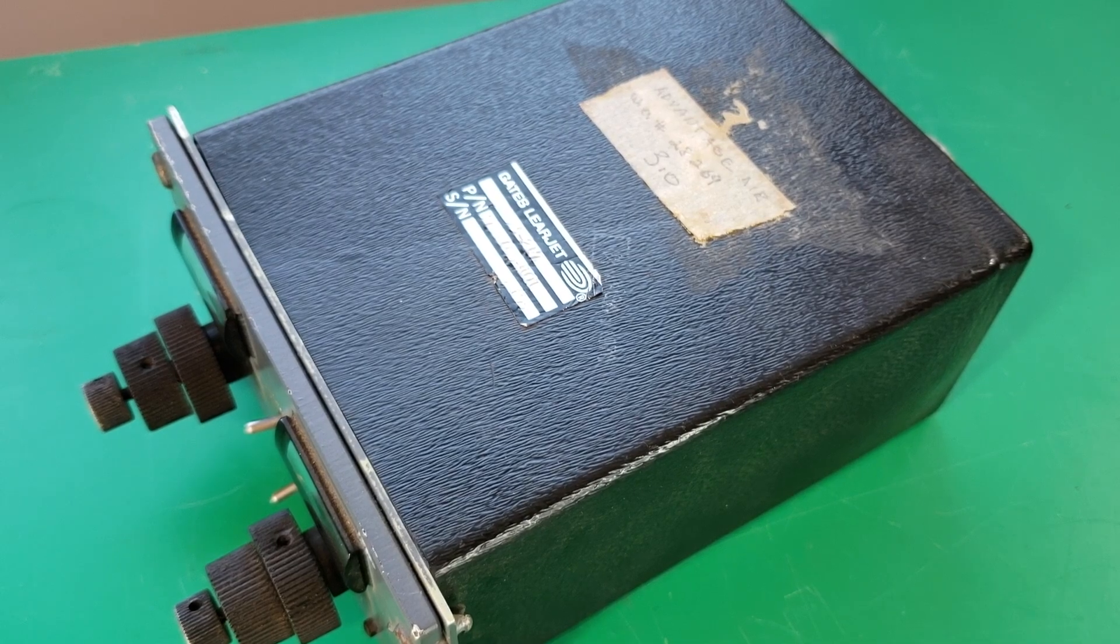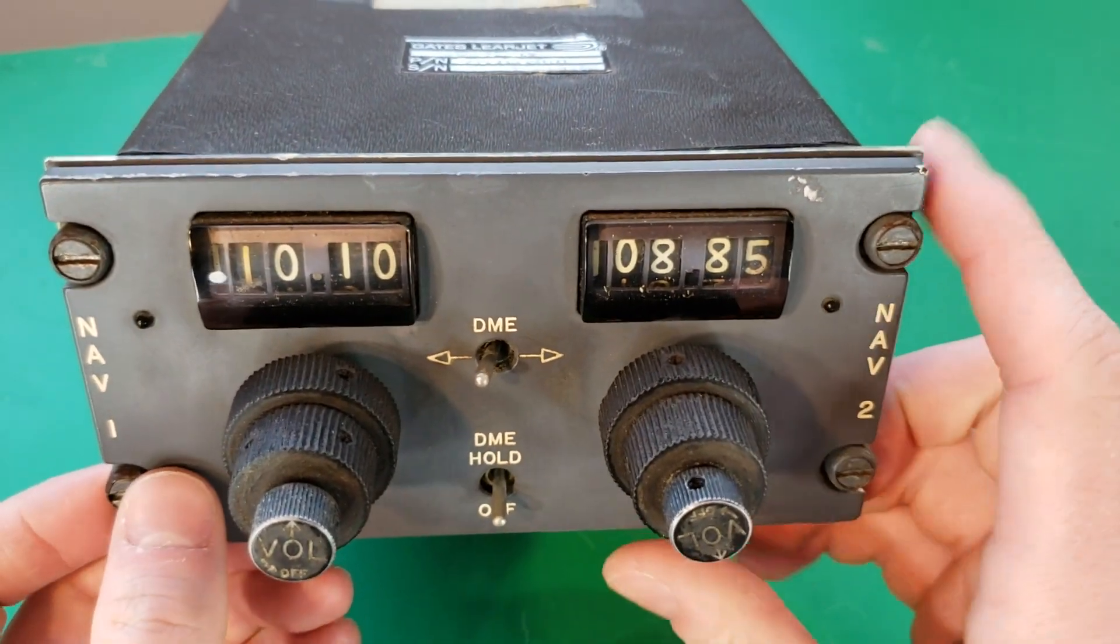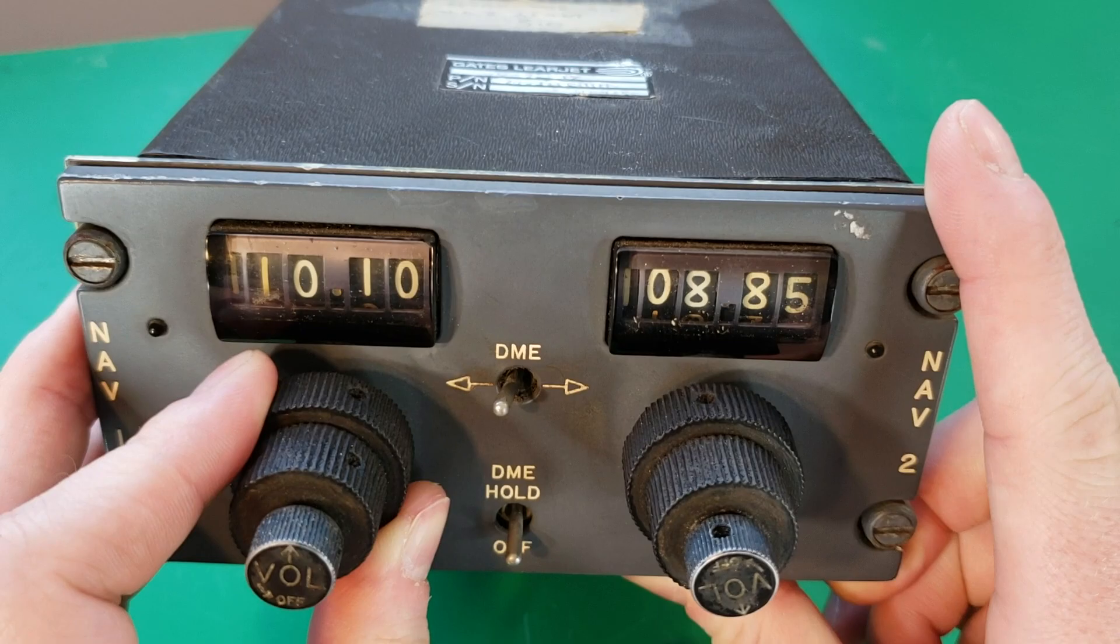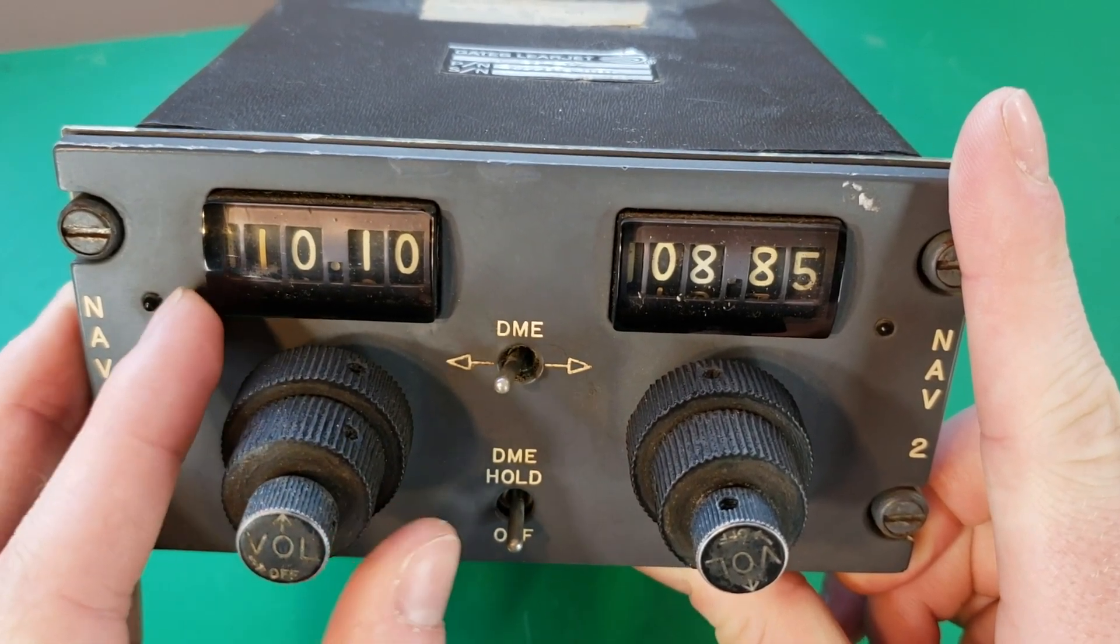Alright, let's take a closer look at this unit. Here's the front panel. We have our adjustment knobs here, and our frequency displays.